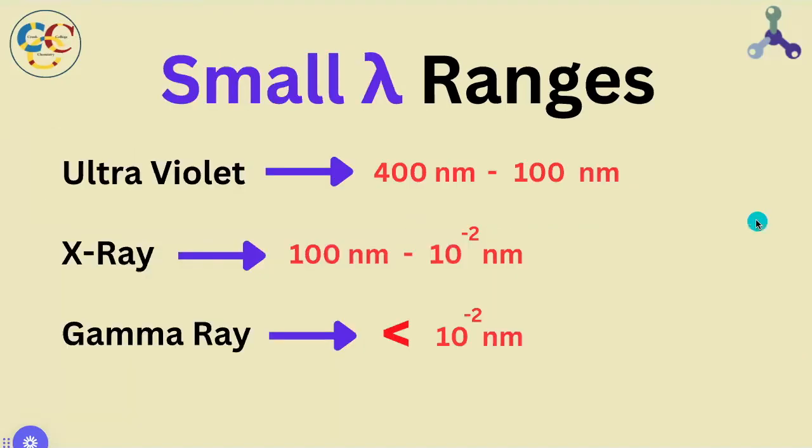Speaking of which, here are the wavelength ranges for the three smallest categories of light by wavelength, gamma rays being the absolute smallest.